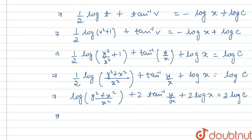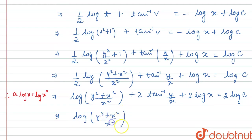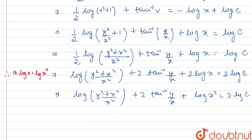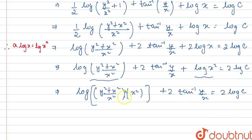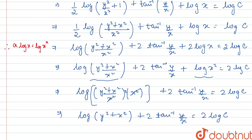Using the log property a·log x = log(xᵃ), 2log x becomes log(x²). Then using log a + log b = log(ab), log[(y² + x²)/x²] + log(x²) combines to log(y² + x²), since x² cancels. So we get log(y² + x²) + 2tan⁻¹(y/x) = 2log c.